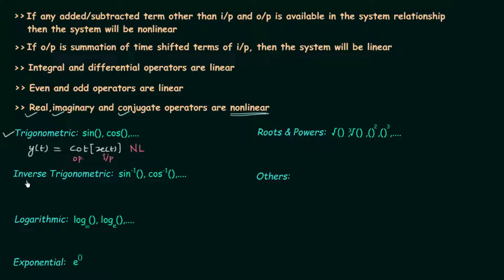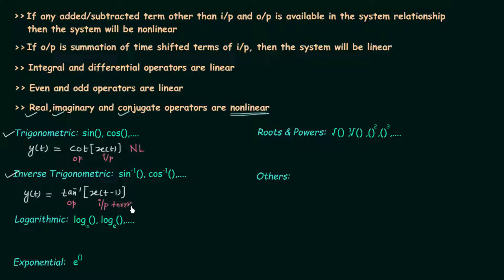The next family is the family of inverse trigonometric functions. Examples are sin inverse, cos inverse, tan inverse, etc. For example, if y(t) equals tan inverse of x(t minus 1), the system first performs time shifting by one unit to the right, and then the tan inverse operator acts on that time-shifted input. Since tan inverse is a nonlinear operator acting on the input, the system is nonlinear.